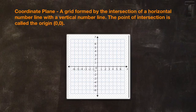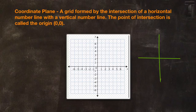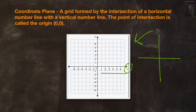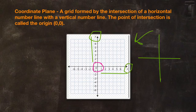So first let's talk about what a coordinate plane actually is. A coordinate plane is just a grid, and it's formed by a horizontal number line that intersects perpendicularly with a vertical number line, like you see in this picture right here. Now this horizontal line is called the x-axis, this vertical line is called the y-axis, and the point where they intersect right here in the middle is called the origin.